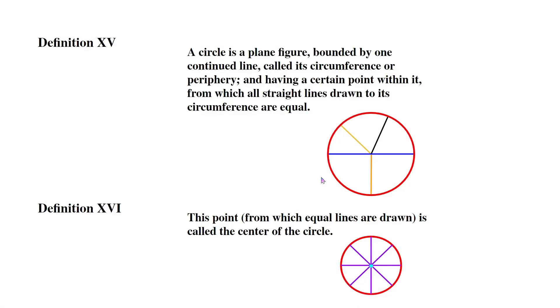Now definition 15. A circle is a plain figure bounded by one continued line.